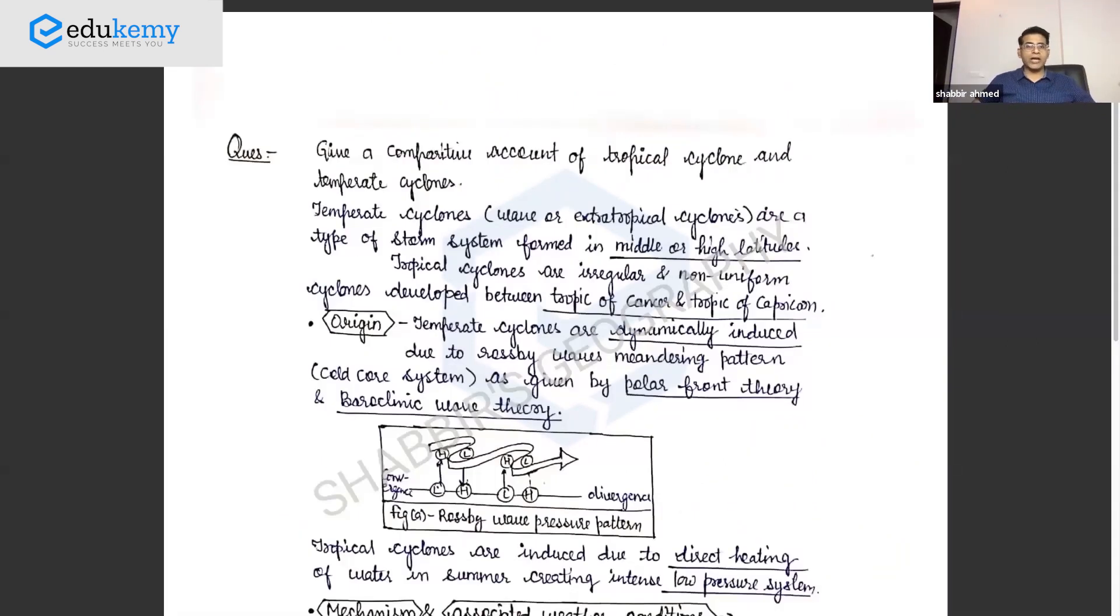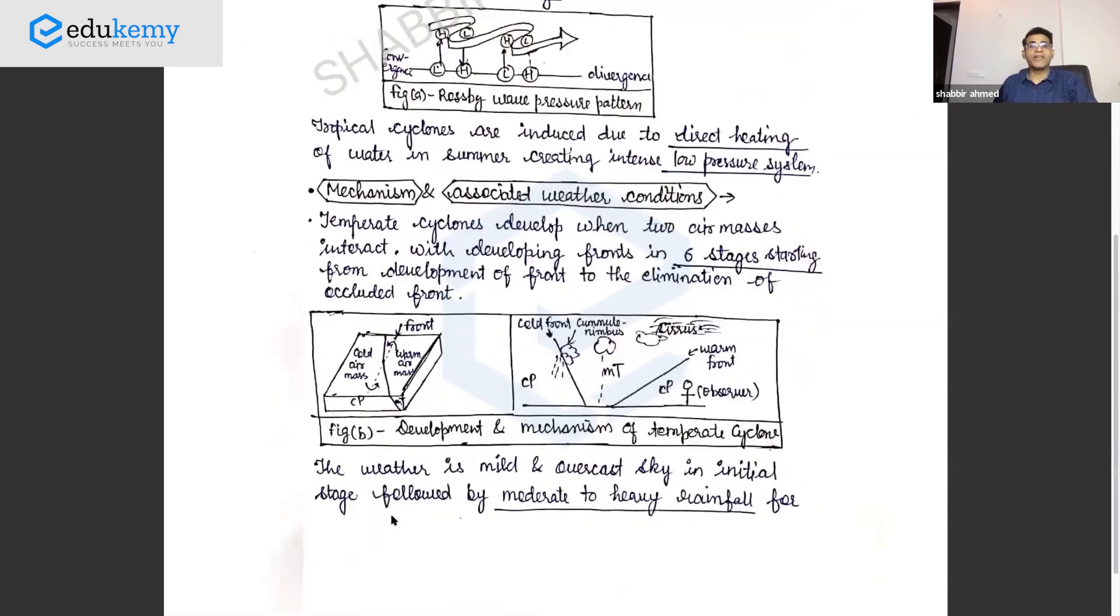Look at this answer - your introduction says: Temperate cyclones, wave or extra-tropical, are a type of storm system of middle and high latitudes. Tropical cyclones are irregular, non-uniform cyclones between tropics. One small paragraph and you're done.